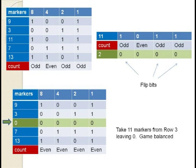We could just as easily have worked with row 3 with 11 markers. Flipping the bits for everything except the 4's column changes 1, 0, 1, 1 to 0, 0, 0, 0, which equals 0. This means if we chose to modify row 3, we must take all 11 markers, leaving 0 markers on this row.